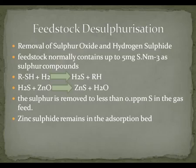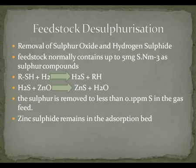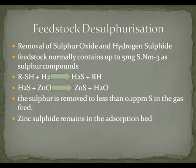Since methane gas contains a little bit of sulfur oxide and hydrogen sulfide impurities, the step of desulfurization is necessary because these impurities would poison the catalysts used further in the next chambers. At the end, the zinc sulfide remains in the absorption bin and will be removed from the methane.